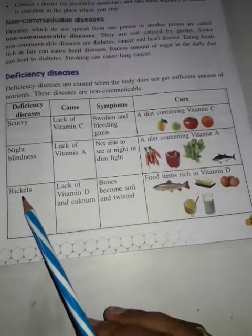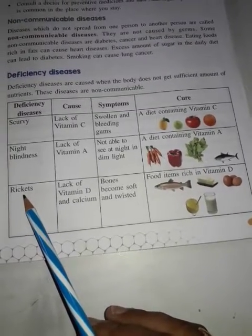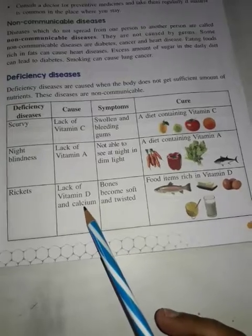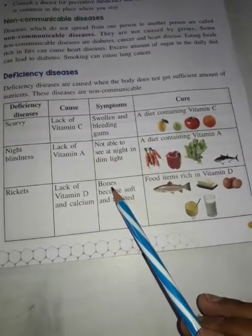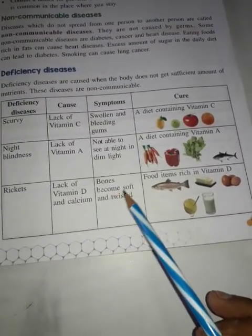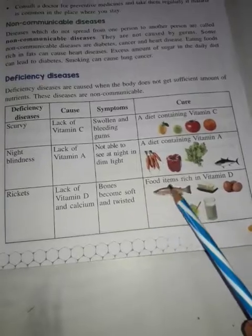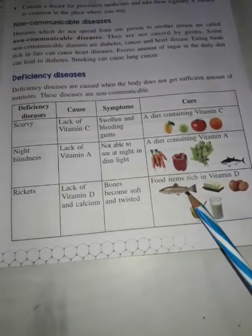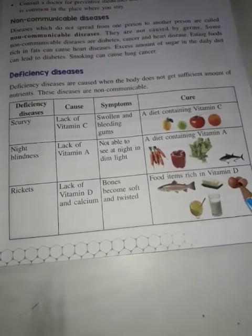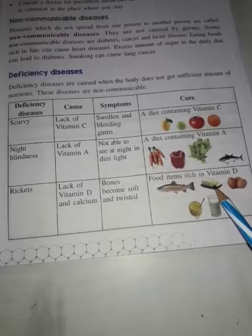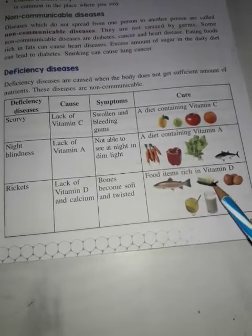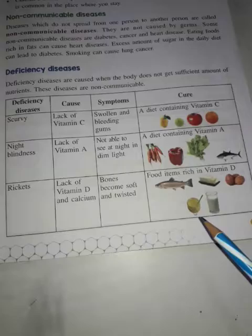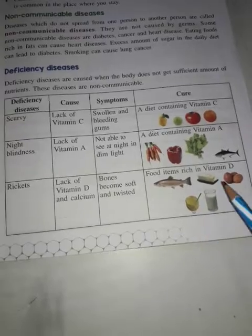Next, rickets is caused by a lack of vitamin D and calcium. Symptom: bones become soft and twisted. Cure: food items rich in vitamin D, such as fish, egg, milk, paneer, ghee, etc.